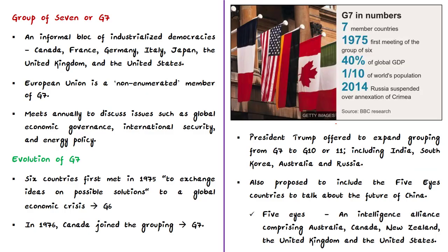The Group of Seven is an informal block of industrialized democracies. It includes the United States, United Kingdom, Canada, France, Germany, Italy, and Japan. In addition to these seven countries, the G7 summits also include the European Union. Since the EU is a unique supra-national organization, it is a non-enumerated member of G7 and does not assume the rotating G7 presidency. The G7 countries annually meet to discuss global economic governance, international security, and energy policy, though their decisions are not legally binding but carry strong political influence.